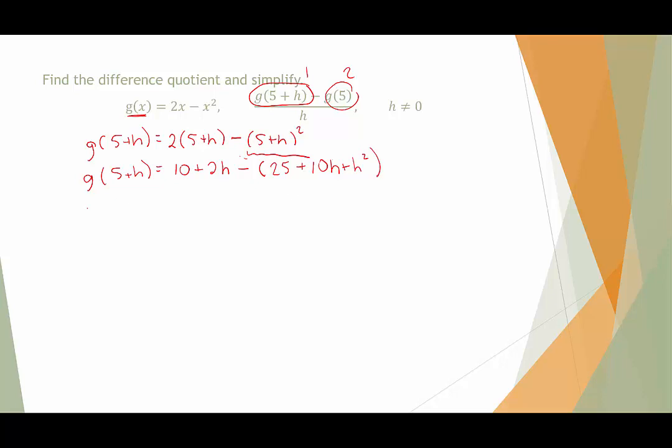And remember, all of this comes after subtraction. So now all those signs are going to change. So I'm just going to rewrite it as 10 plus 2h minus 25 minus 10h minus h squared. 80% of problems happen right there with that subtraction, and the other 20% happen with the subtraction in the difference quotient up there.